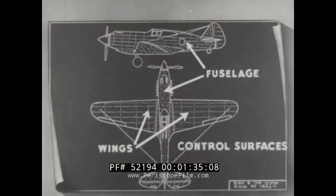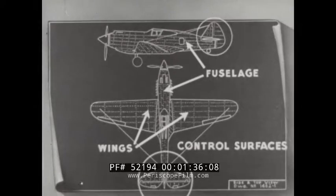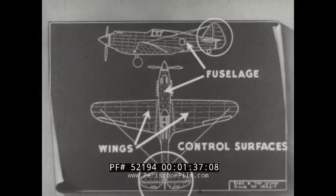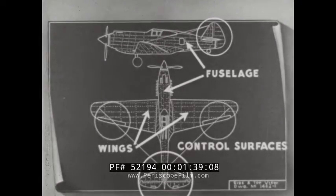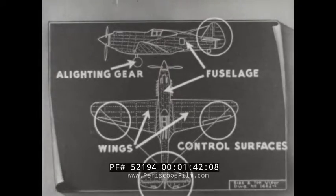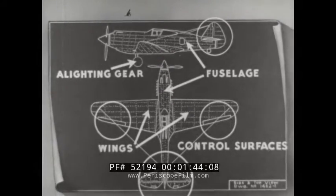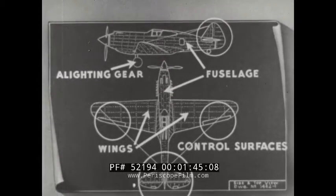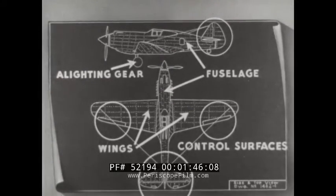These consist of the empennage or tail assembly and the ailerons or wing control surfaces, which are attached to the trailing edge of each wing. The alighting gear permits movement of the airplane on the ground.